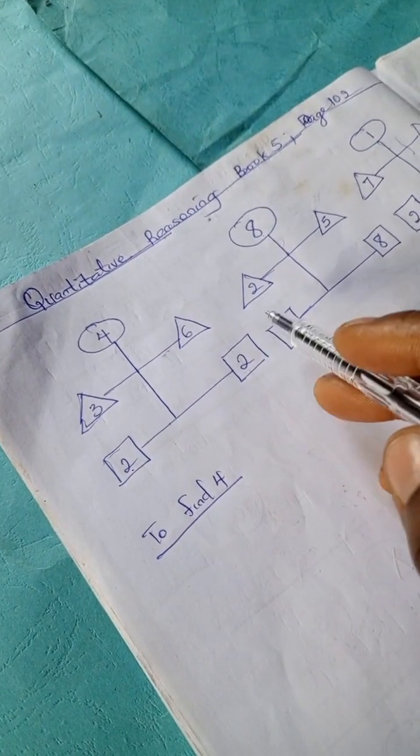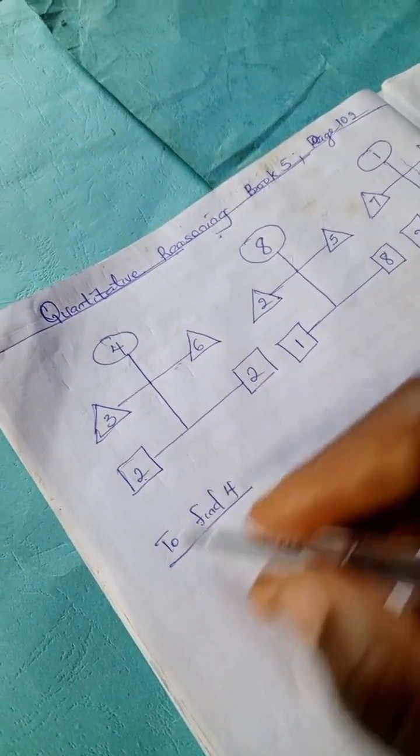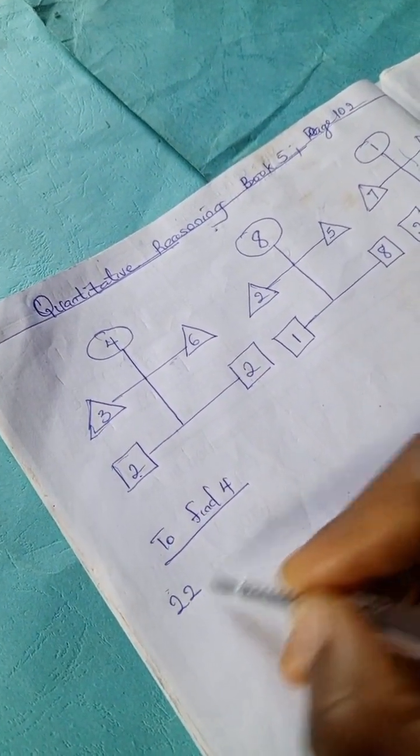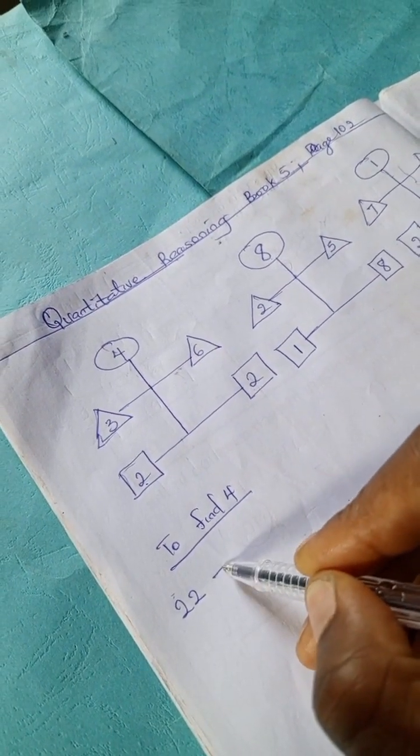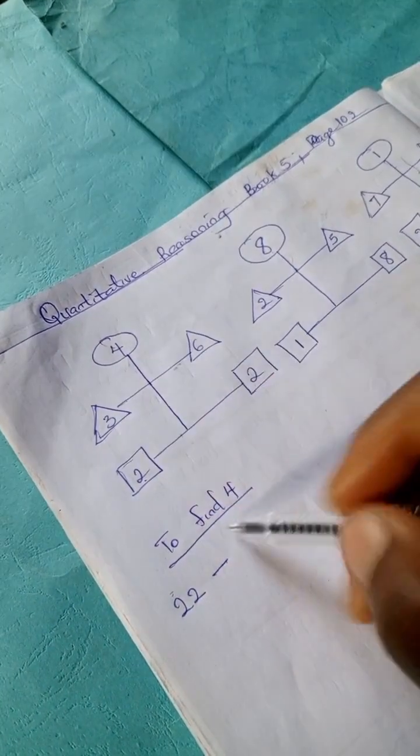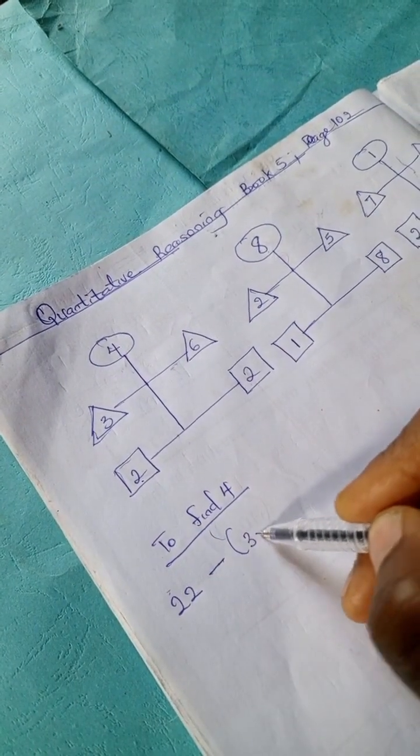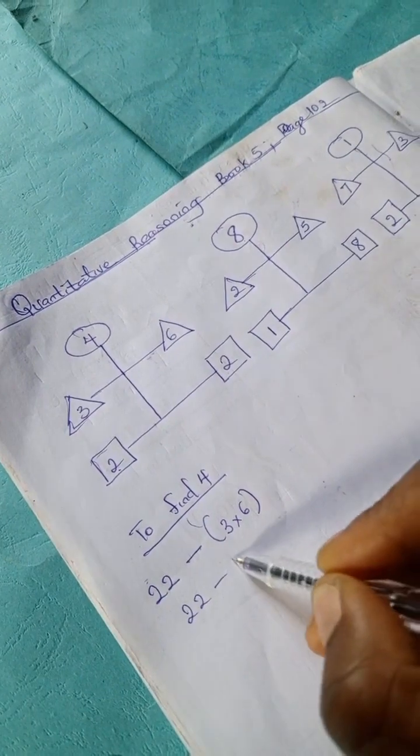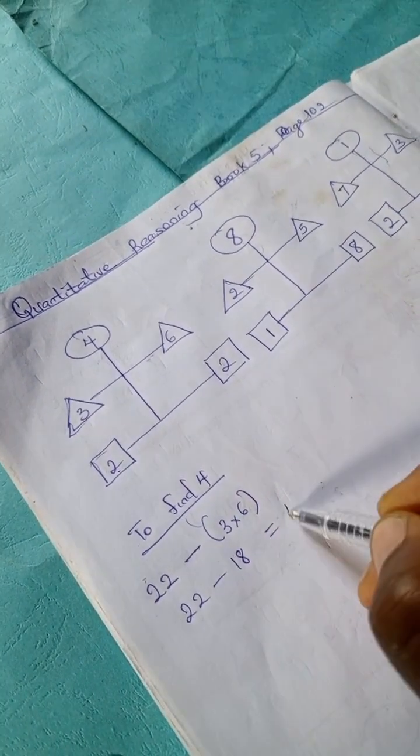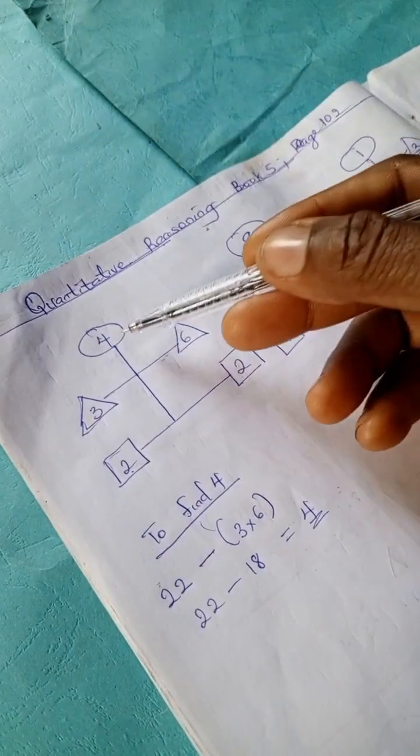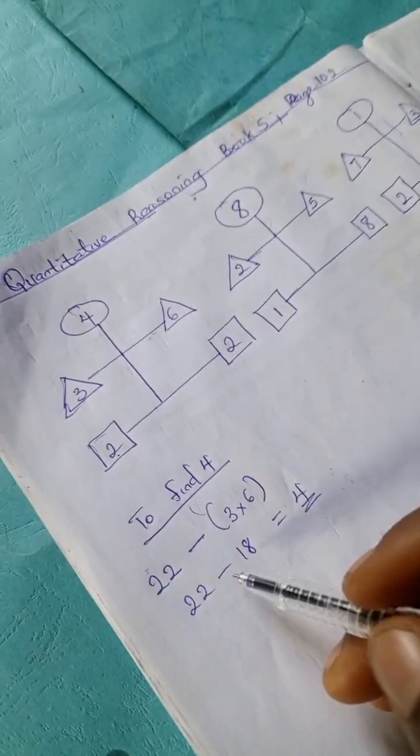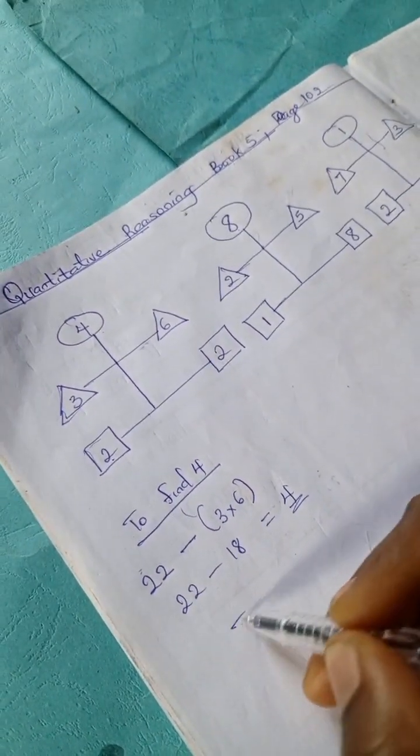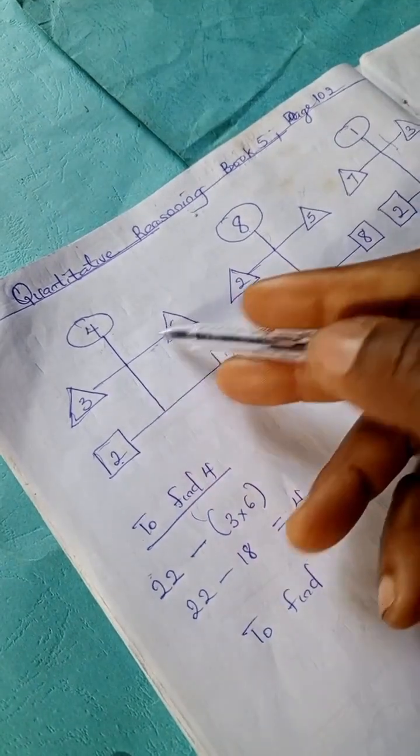Instead of having 2 plus 2 or 2 minus 2, we're going to have 22. We're going to multiply these two numbers, so 3 times 6. Here we have 22 minus 18, and 22 minus 18 is 4. So that's how they came about this 4. So to find 3.